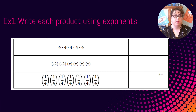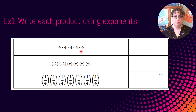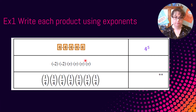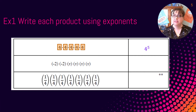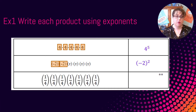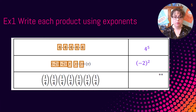Now let's write each product using exponents. The first one has a base of 4, and we're going to raise it to the 5th power. The next one is more in-depth because we have two different bases: a base of negative 2 and a base of x. For negative 2, we have two of those, so we write negative 2 squared — make sure the negative 2 is in parentheses. Then for x, we have four of them, so it's x to the 4th power.